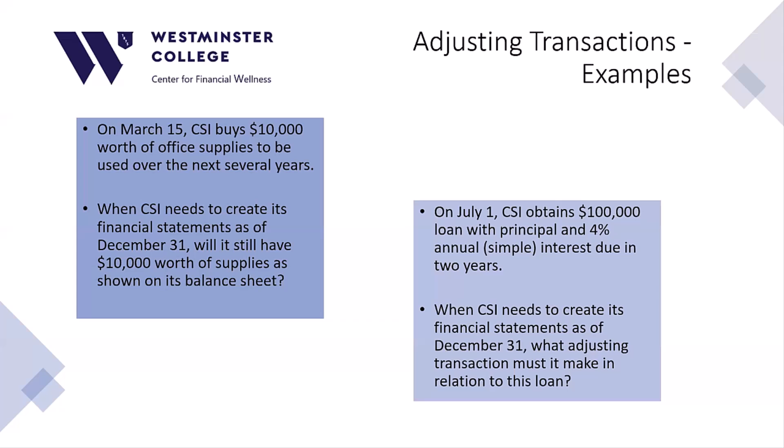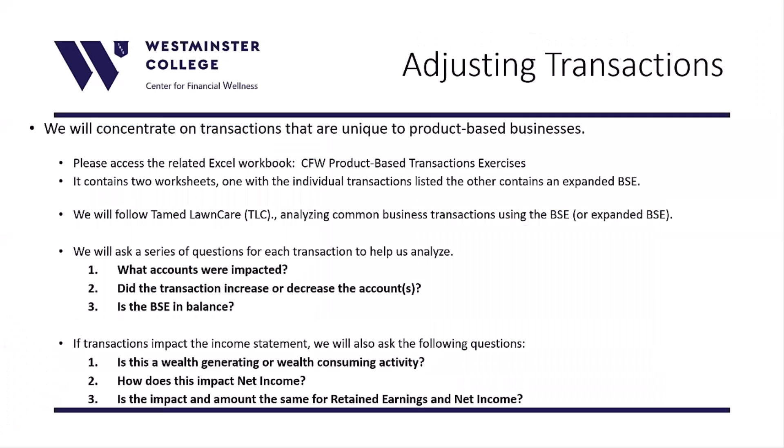In this lesson we'll explore a few examples of adjusting transactions. Particularly, we will analyze the changes that these transactions cause to the financial statements, and then we'll look at what the lack of creating these adjusting transactions would have on the financial statements. Please access, open, and save the CFW adjusting transactions exercises workbook. We will follow the same analysis methodology — first looking at the impact on the balance sheet accounts, then determining if there's an impact on the income statement accounts. Pause your video now and access and review that workbook.